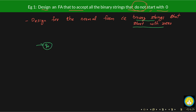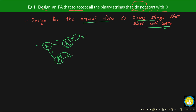We want strings that start with zero, so from Q0, if we see a zero we move to the final state Q1. After that, if we see anything (zero or one), it's not an issue — we stay in Q1. If we see a one as the first alphabet from Q0, we go to a dead state Q3 which is not a final state. Even if you see anything after that, you remain in the dead state. This DFA accepts all binary strings that start with zero.